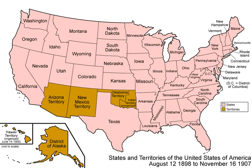Abundant natural resources such as coal, timber, oil, and farmland helped usher in the Second Industrial Revolution.